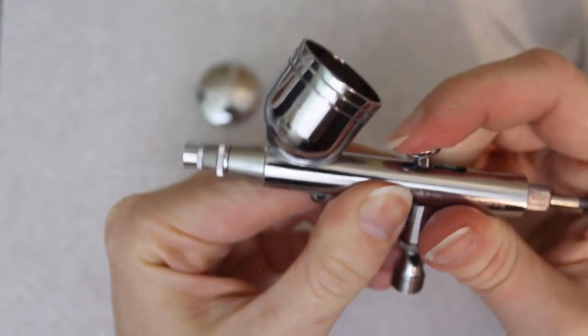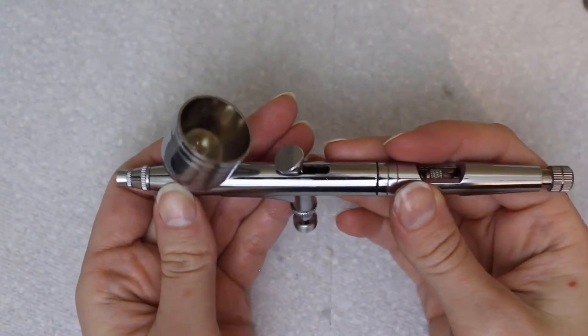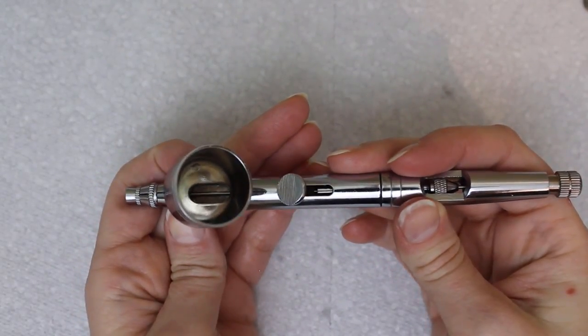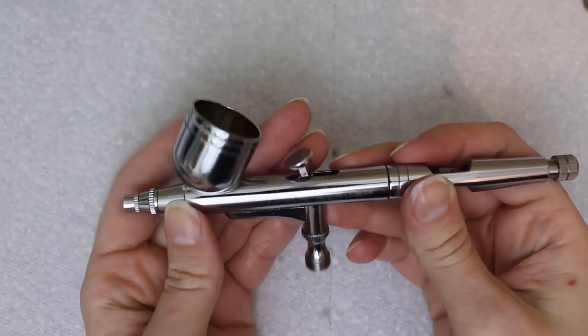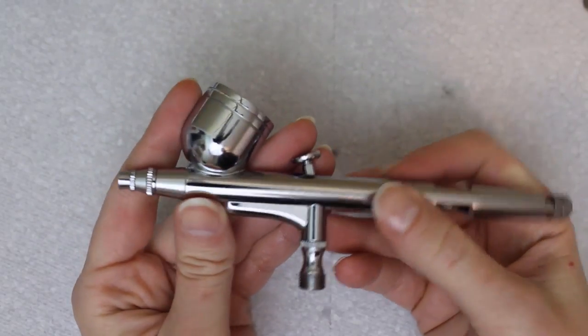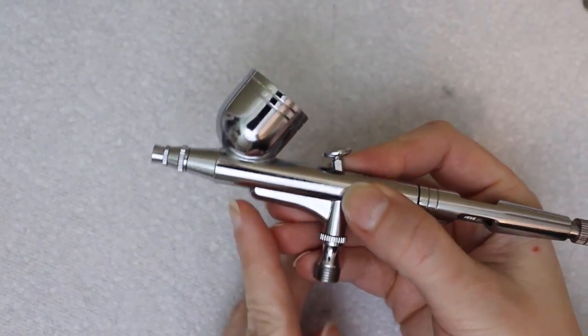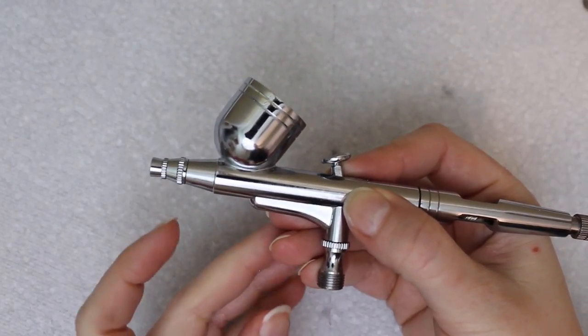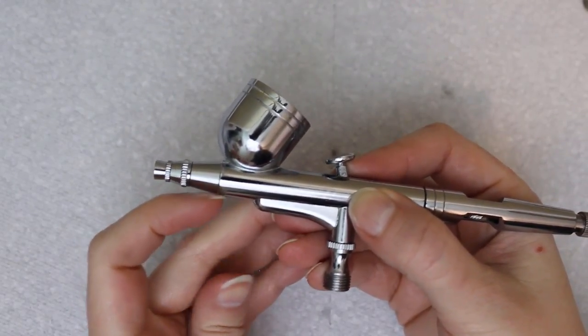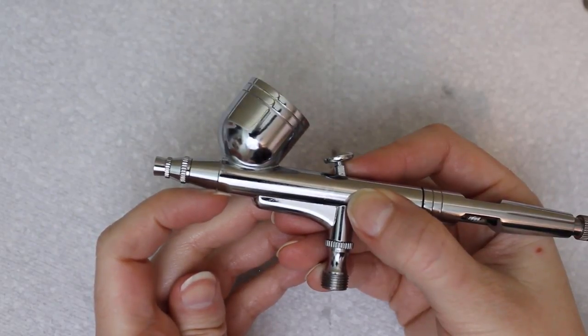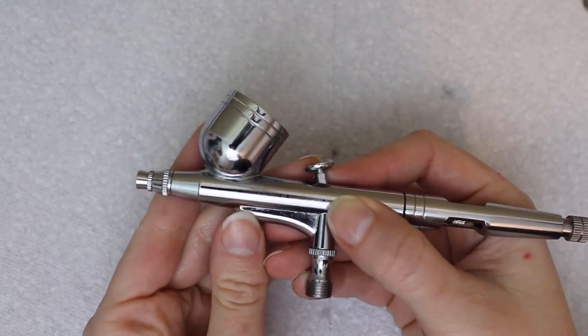So now that you know how to clean and reassemble an airbrush, let's talk a bit about my setup. Mine is a gravity feed brush, which is why it has the cup on top. Airbrushes come in two main varieties, gravity feed and siphon feed. A siphon feed brush has a small jar that screws onto the bottom, and it sucks the paint out of that container. I find gravity feed brushes easier to clean.